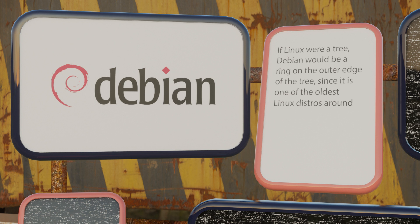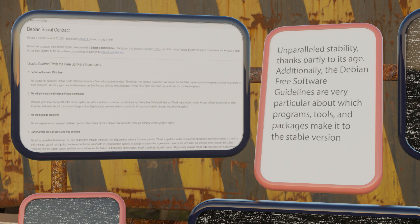Debian, if Linux were a tree, Debian would be a ring on the outer edge since it's one of the oldest Linux distros around. Besides being one of the oldest, Debian has many development and programming friendly features. It has unparalleled stability thanks partly to its age. The Debian free software guidelines are very particular about which programs, tools and packages make it to the stable version. This strictness means that unstable packages rarely make their way onto Debian, making it one of the most stable programming distros — because very few things are worse than a system crash mid-work.